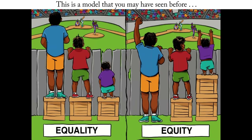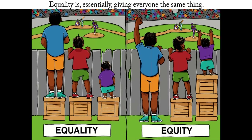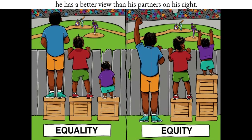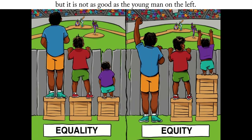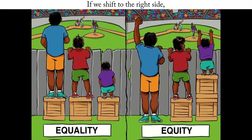This is a model that you may have seen before. If we think about equality, the picture on the left is a visual representation of what equality looks like. Equality is essentially giving everyone the same thing. Even though the young man in the blue shirt is taller, he actually has a better view than his two partners. The young man in the red shirt has a view, but it is not as good. And the young man on the far right, because he has the same thing as the others, actually still can't see the game.